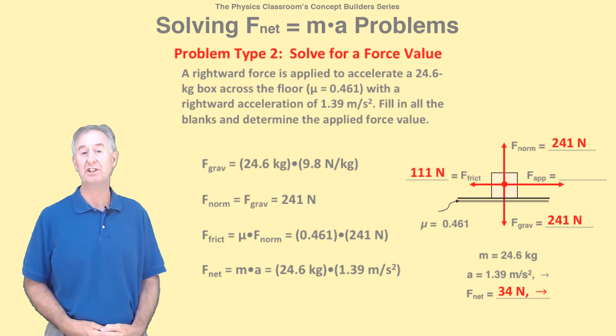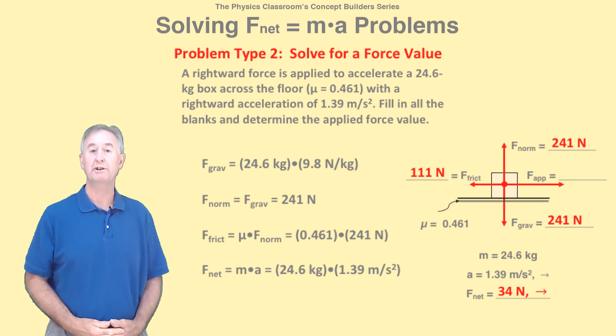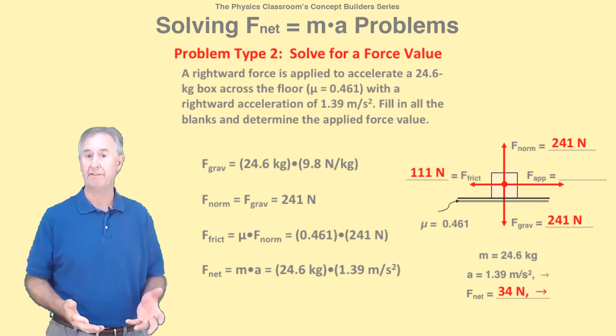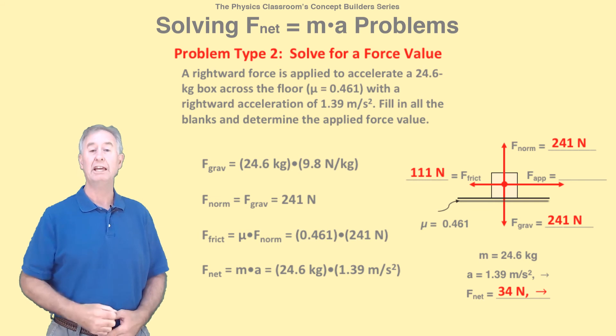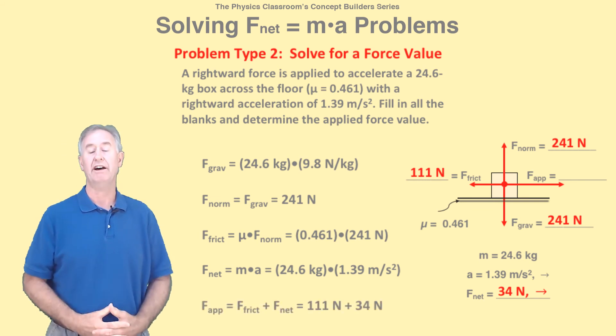If the f net is directed right, then the right force is bigger than the left force by f net. You can write f right equal f left plus f net. If the left force is bigger, you would write f left equal f right plus f net.